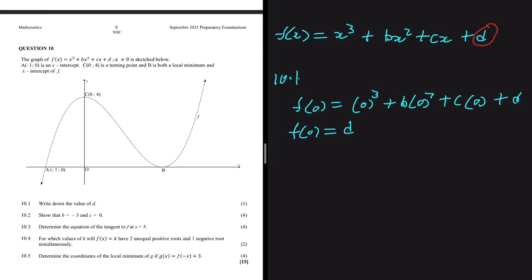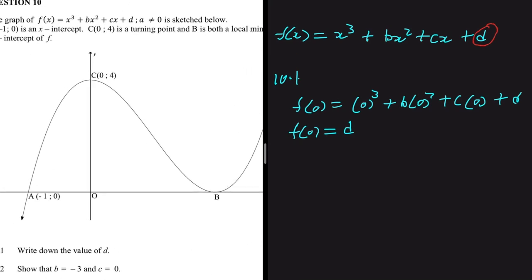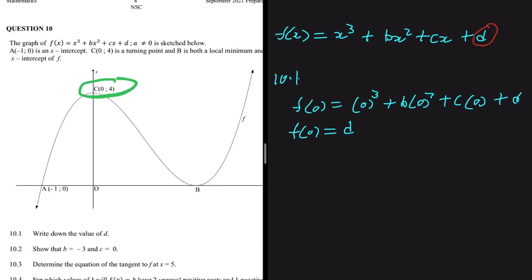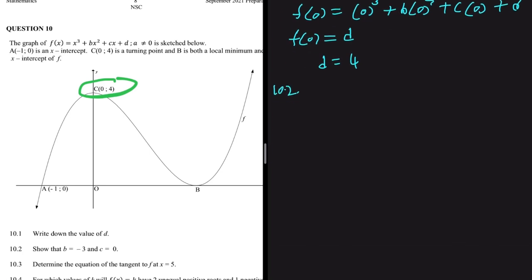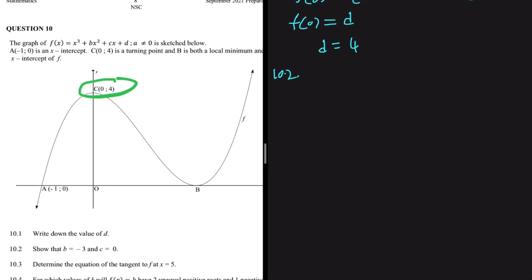Looking at our graph, we can see that C is the y-intercept, and the y-value there is 4. So we can conclude that d = 4. Now let's do question 10.2, which asks us to show that b = -3 and c = 0.